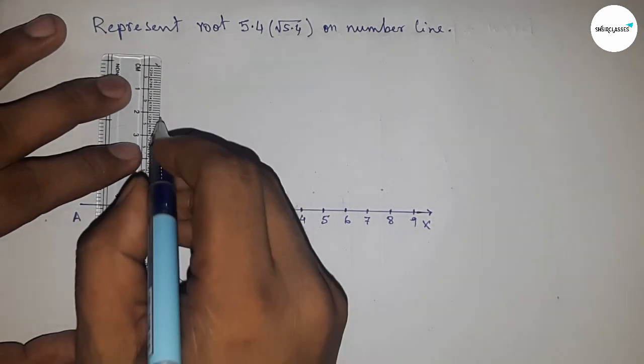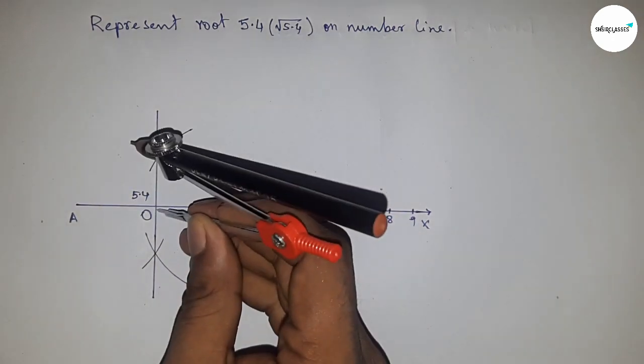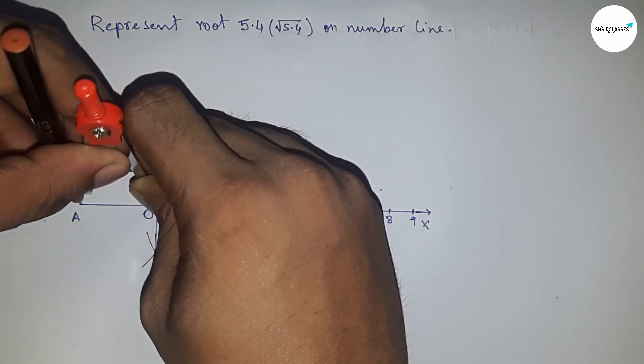Next, join this which meets at point O. Now take the distance OA and OC to draw a semicircle through the point A and C.